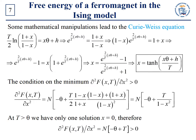On this slide some mathematical manipulations are shown. Finally, we obtain the Curie-Weiss equation for the order parameter. We already know that this equation for zero field and temperature greater than theta has only one zero solution, and for zero field and temperature less than theta, there are three solutions. In other words, dF/dx equals zero at three different values of x.